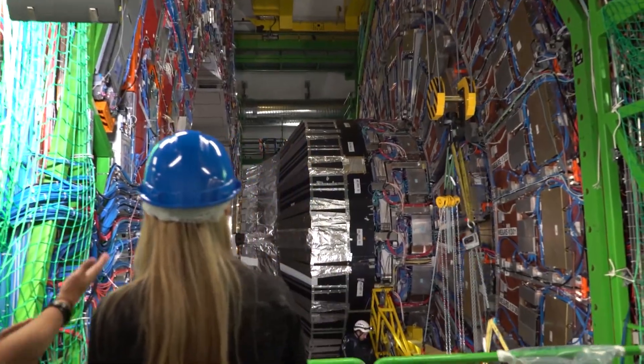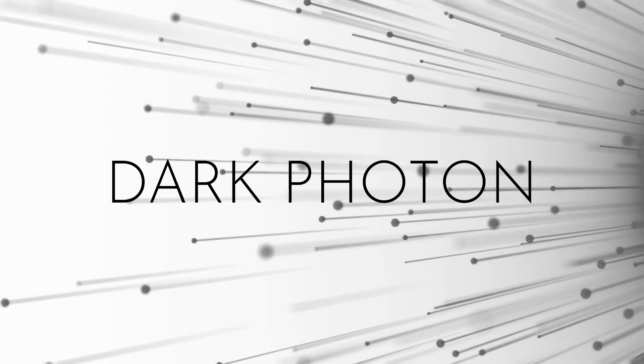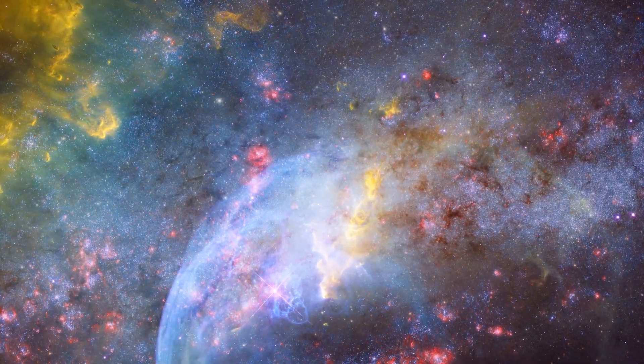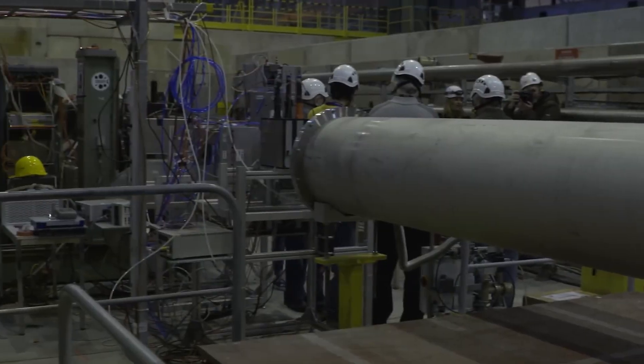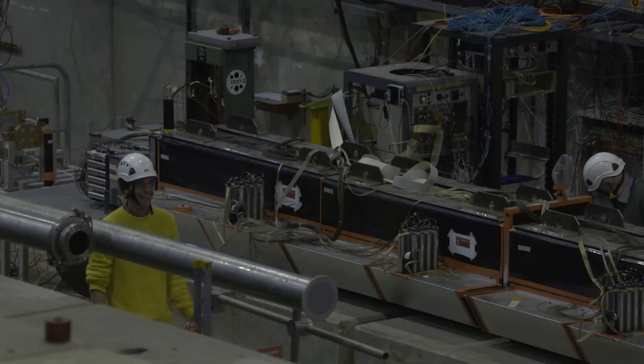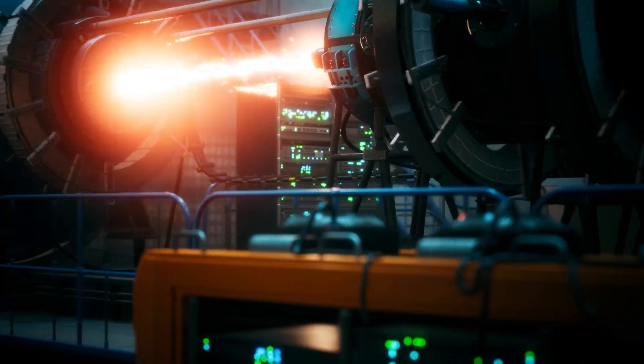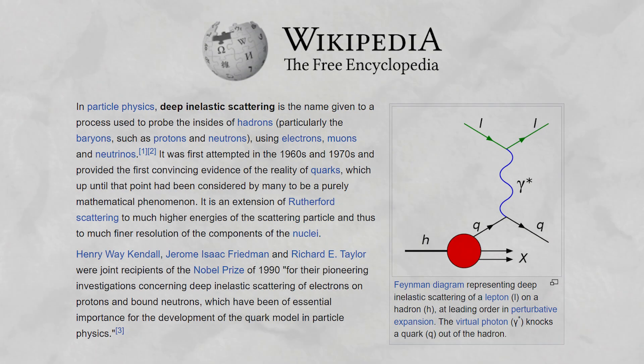Lots of new things have been found out about dark matter. One important idea is the dark photon, a big deal in studying dark matter these days. This theoretical particle, akin to the photon in electromagnetism, could bridge the known universe with the elusive dark sector. Scientists are keenly investigating its potential through high-energy particle collision experiments, specifically using a process called Deep Inelastic Scattering.